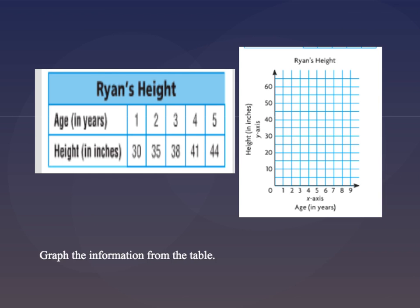Alright, go ahead and pause this video. First of all, I want you just to write out the ordered pairs. If the x-axis is Ryan's age in years and then the y-axis is his height in inches, so if I'm looking here I can see age is x, height is y. First of all, I just want you to pause the video and then write out the coordinate pairs or the ordered pairs, and then replay the video to check your answers.